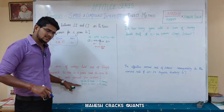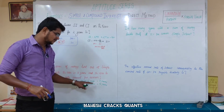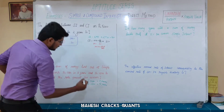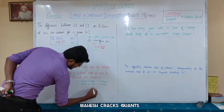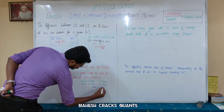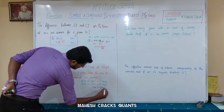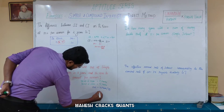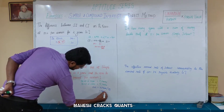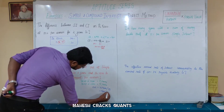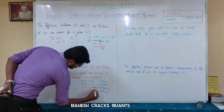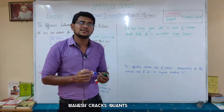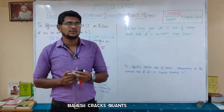So the difference is simply the Simple Interest for 2 years (5 years minus 3 years). Rs. 1500 minus Rs. 1380 equals Rs. 120 for 2 years. Therefore, Simple Interest for 1 year is Rs. 60.